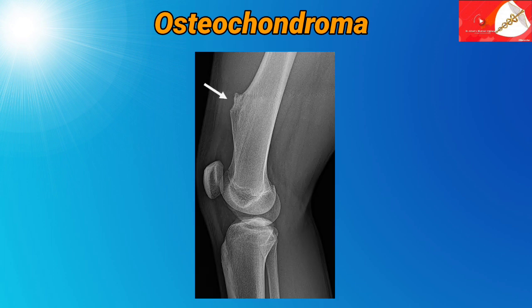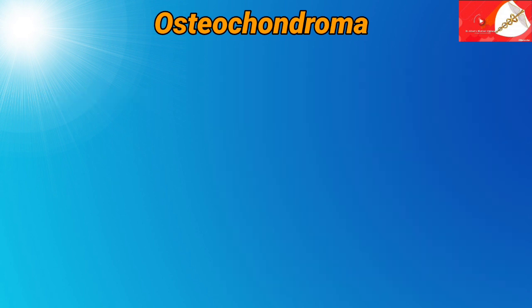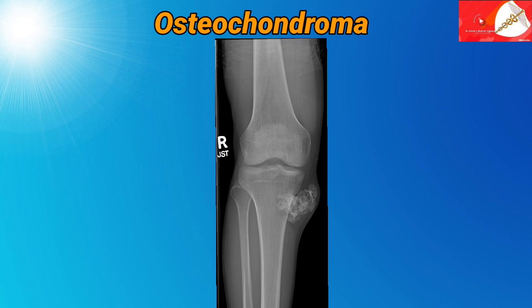In this radiograph, here you can see a solitary sessile osteochondroma on the lower portion of the femur. In this radiograph, here you can see a regular-shaped lesion projecting over the left iliac wing in appearance like a cauliflower. Here in this radiograph, you can see a large cauliflower exostosis observed at the posterior medial aspect of the proximal tibial metaphysis.